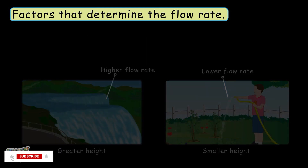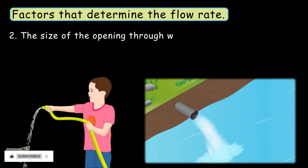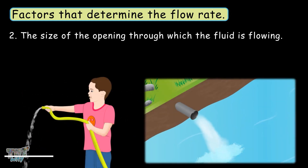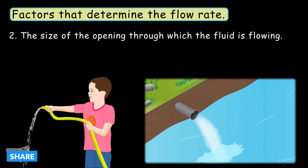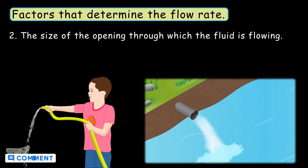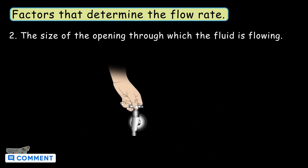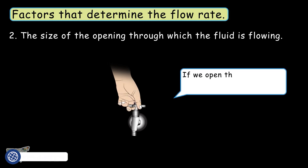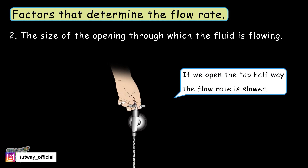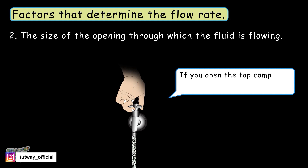The second factor is the size of the opening through which the fluid is flowing. The larger the opening of the pipe, tap, or container through which the fluid is flowing, the higher the flow rate. Flow rate of water coming through a tap depends on how much we open the tap. If we open the tap halfway, flow rate is slower. If you open the tap completely, the flow rate will be larger.